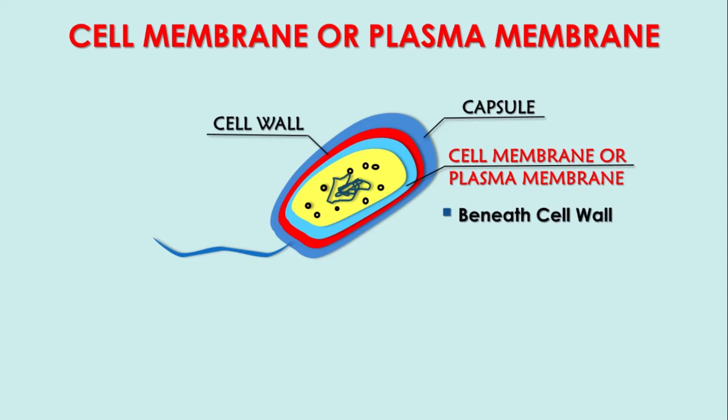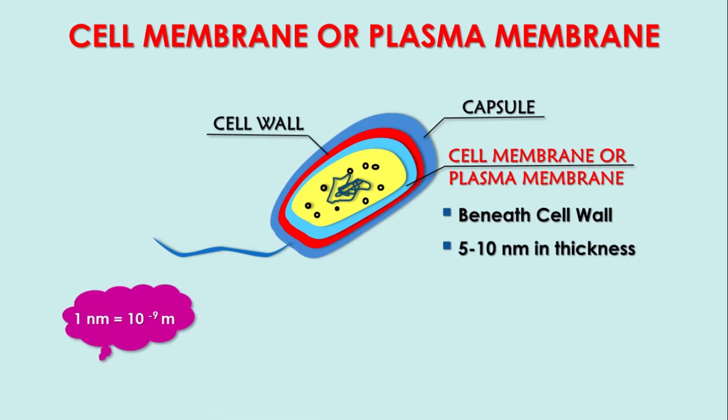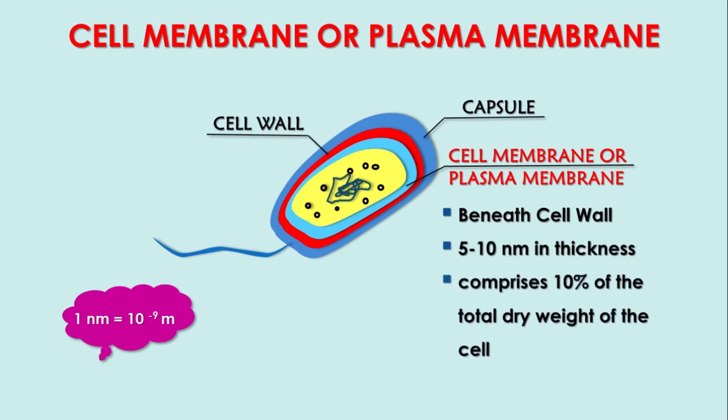The plasma membrane is just beneath the cell wall and is about 5 to 10 nanometers in thickness — a very thin structure. One nanometer is equal to 10 to the power minus 9 meters. The cytoplasmic membrane accounts for about 10% of the total dry weight of the cell, which is less than the cell wall.